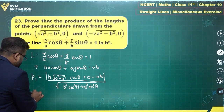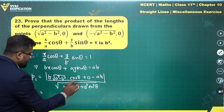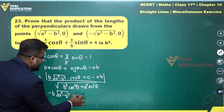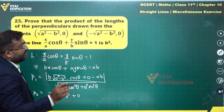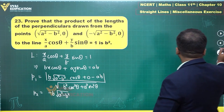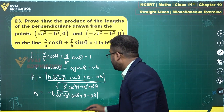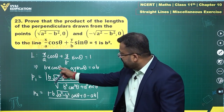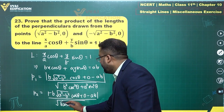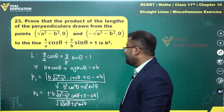Similarly, for P2, the second point is (−√(a²−b²), 0). Instead of +√(a²−b²) we have −√(a²−b²), and the y-term is still 0. So P2 equals the modulus of −b·√(a²−b²)·cosθ − ab, divided by √(b²cos²θ + a²sin²θ).